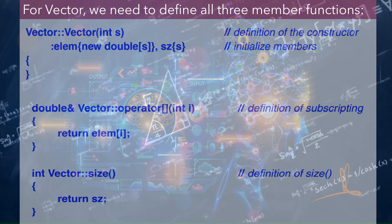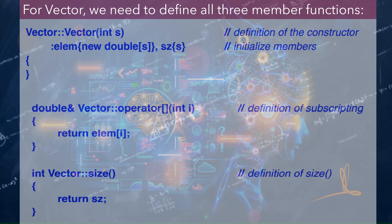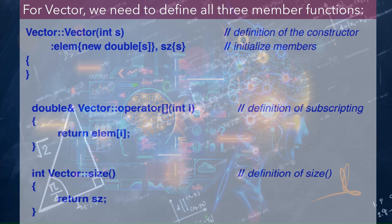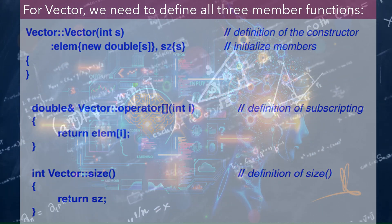double& Vector::operator[](int i) { // definition of subscripting, return elem[i]; } int Vector::size() { // definition of size, return sz; }